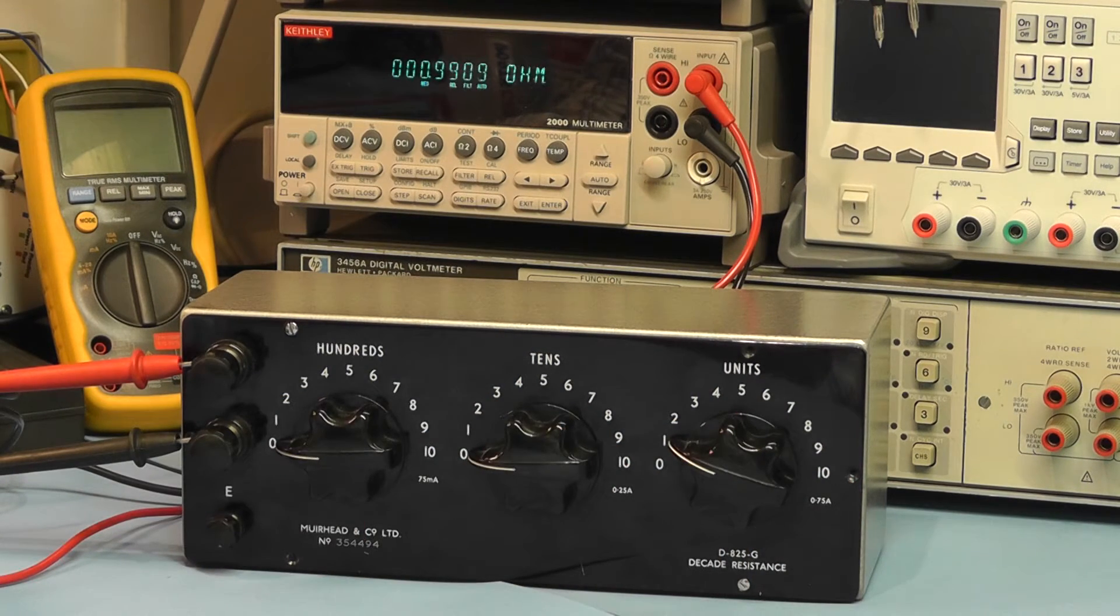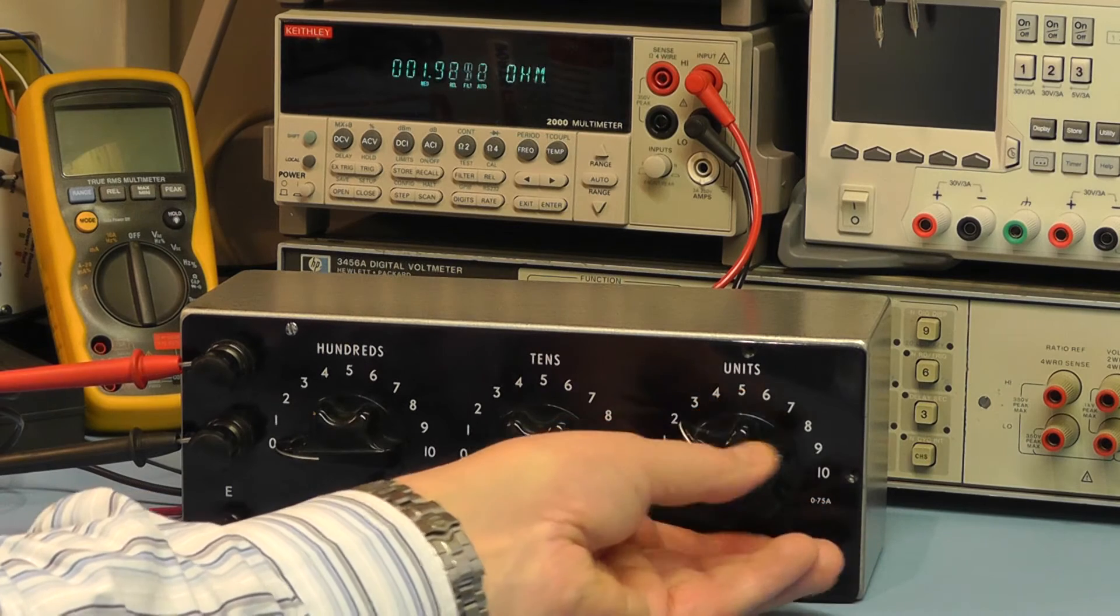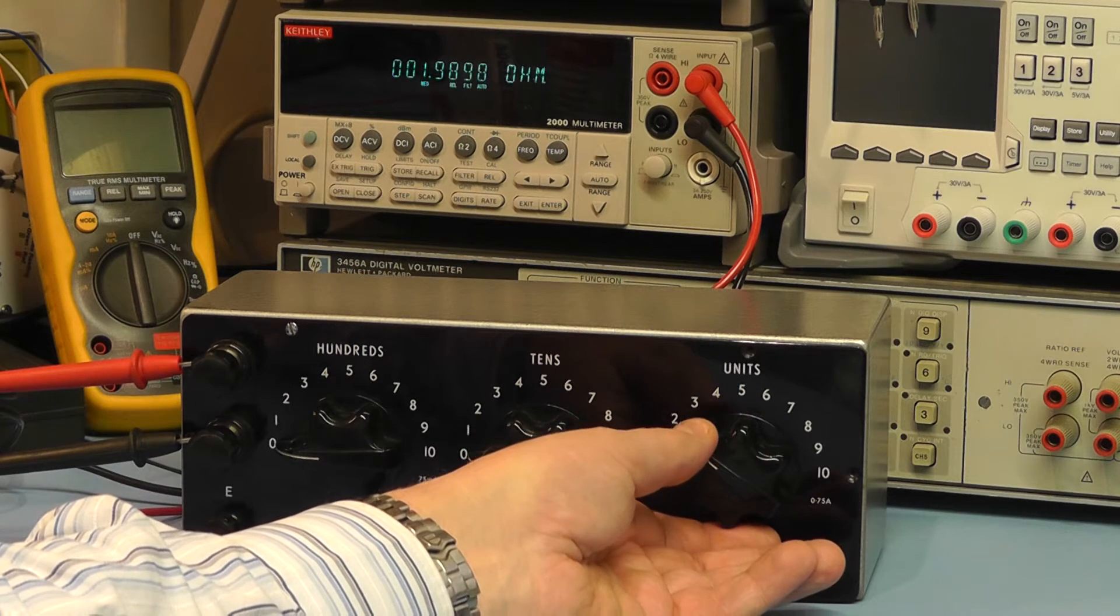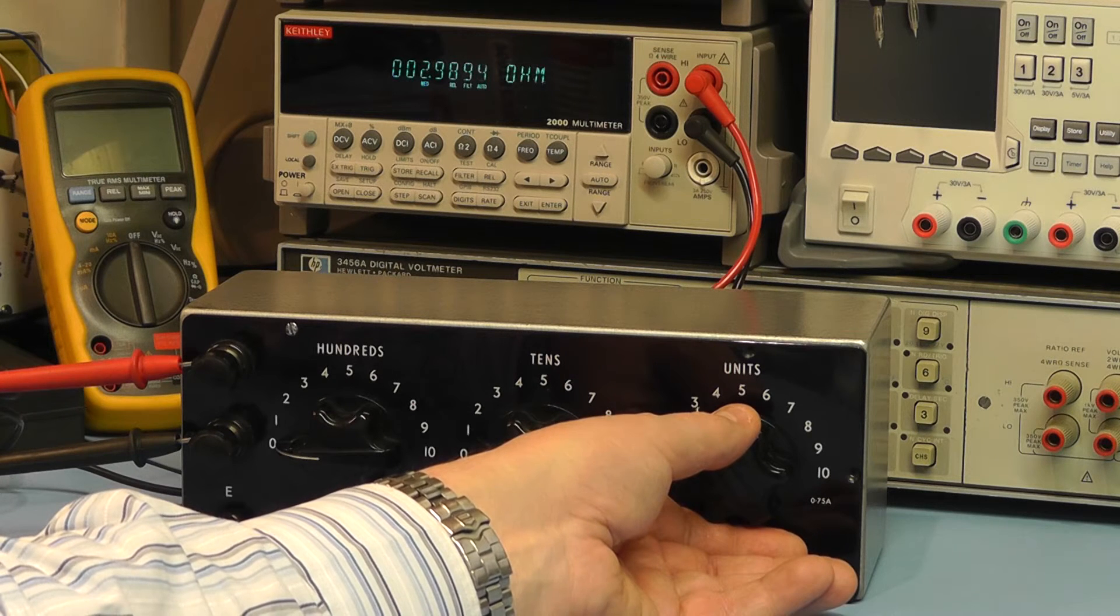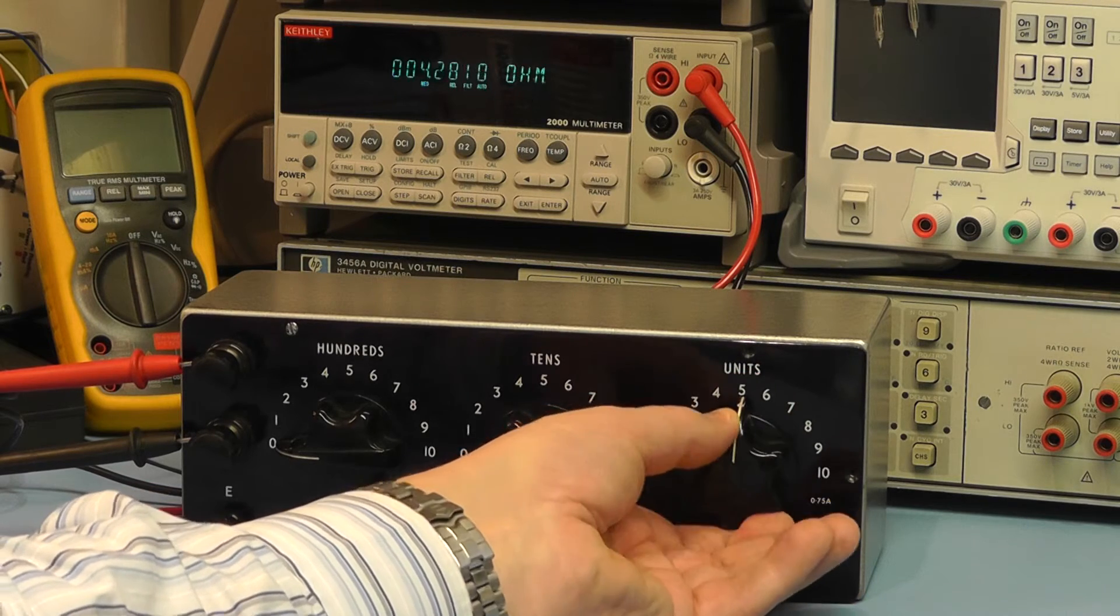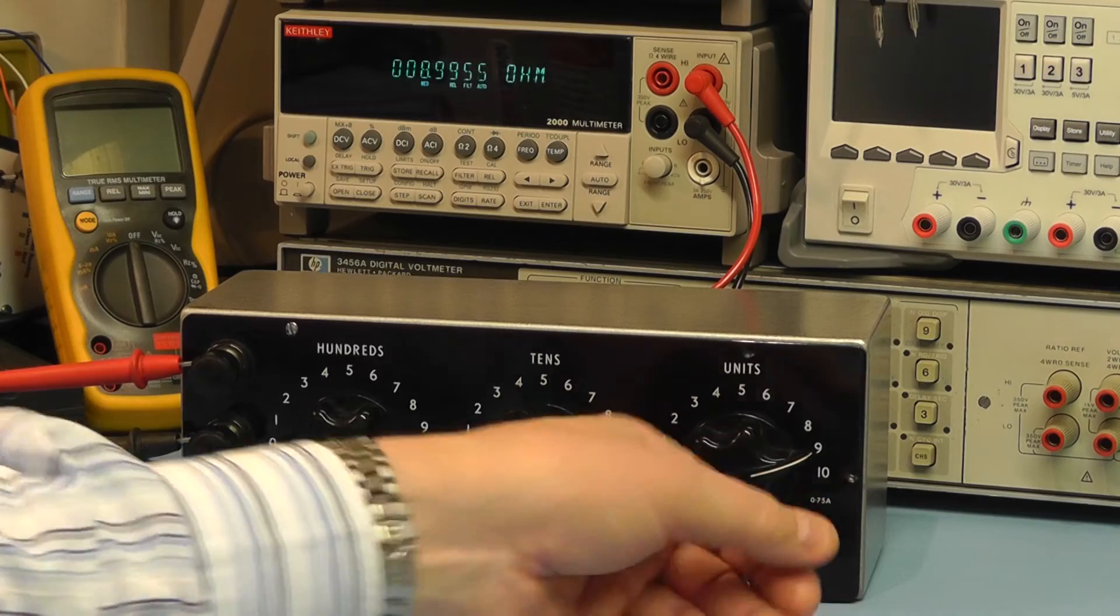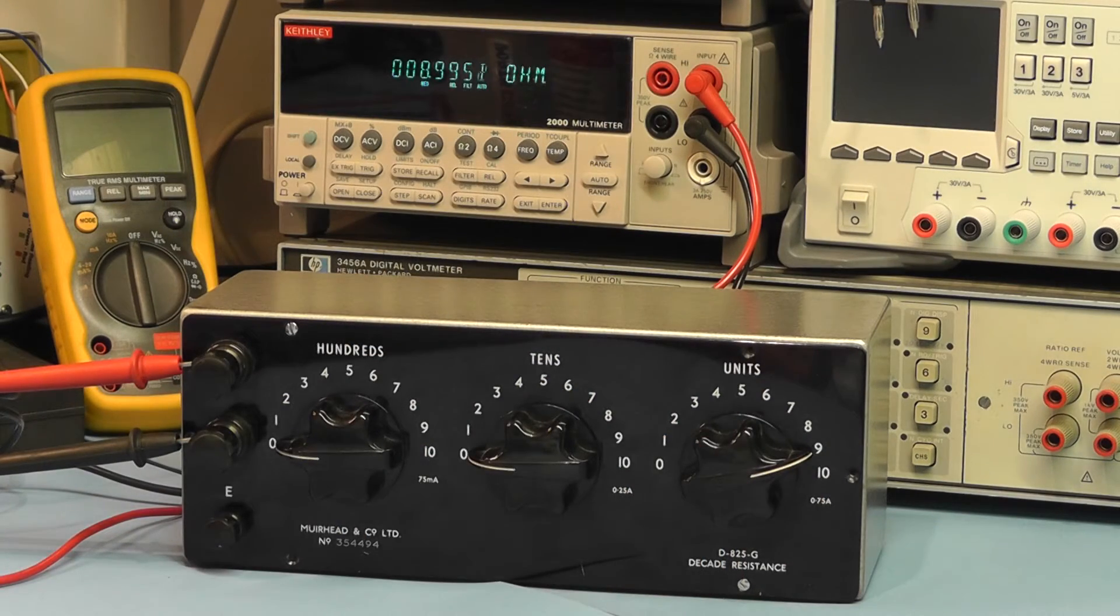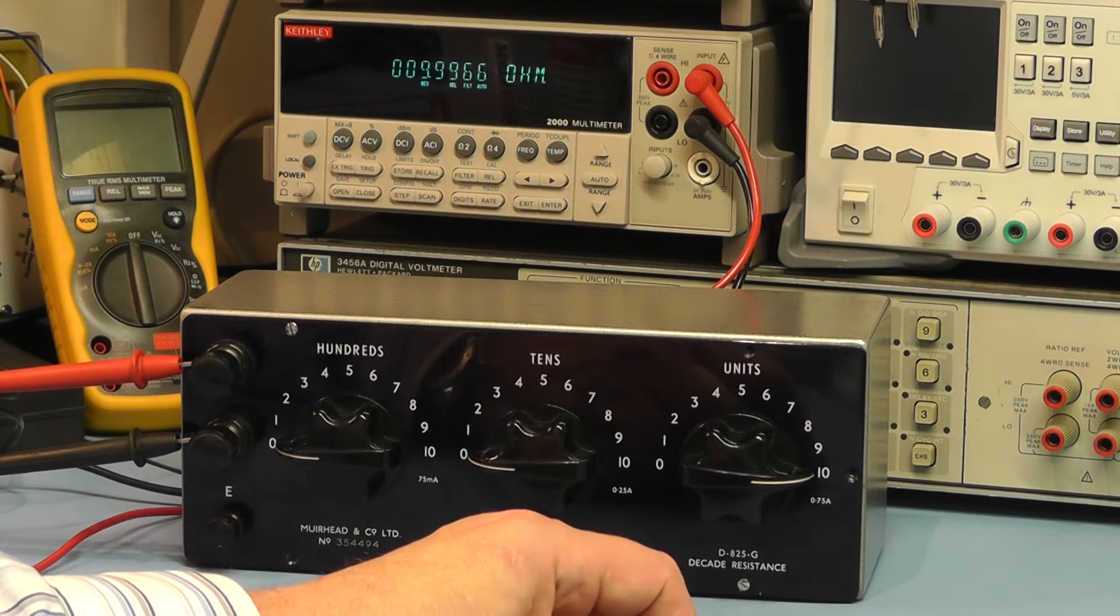It's reading 0.9909 of an ohm. On the two ohm range it's reading 1.99, on the three 2.989, and so on. Even on the low ohm ranges, I'll take it round down to nine, it's reading 8.9953, and on ten we're reading 9.996 of an ohm.